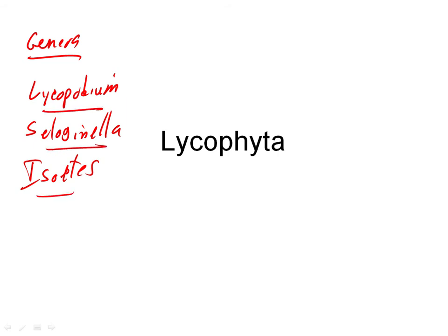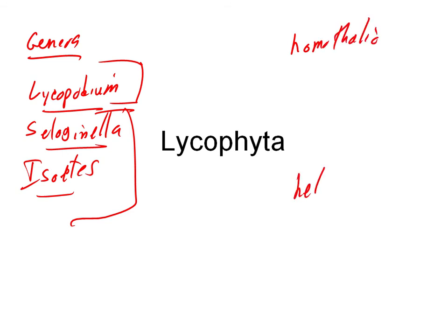Lycopodium is in a group by itself, and then Selaginella and Isoetes are in a group by themselves. To explain the difference between those groups, let's go back and remember our terms: homothalic and heterothalic. Homothalic means there's a single gametophyte with both sex organs on that gametophyte. Heterothalic means two different gametophytes, one of each sex.